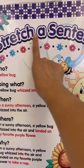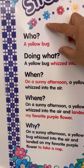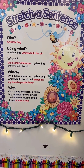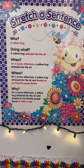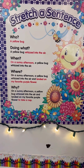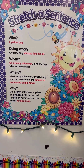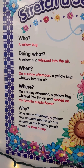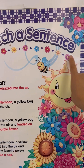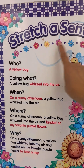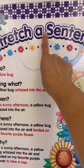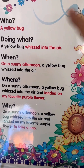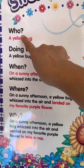The title is 'Stretch a Sentence.' You can add colors or details to your writing. You need to add more details and learn how to stretch your sentence. You need to answer: who, what, when, where, and why.